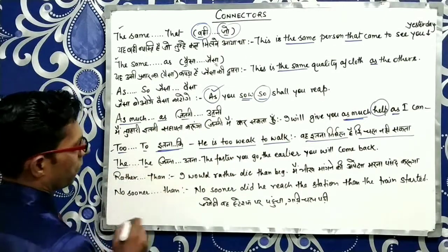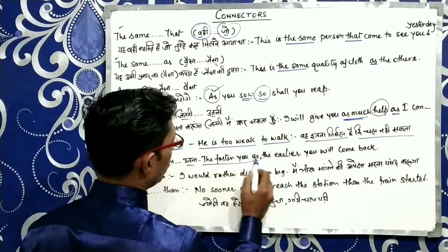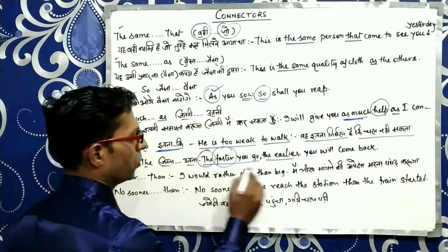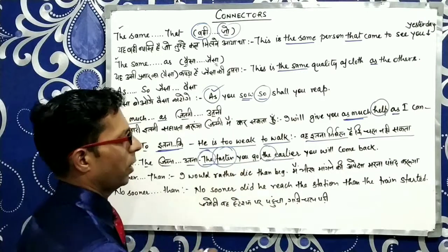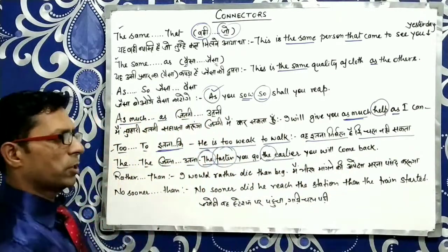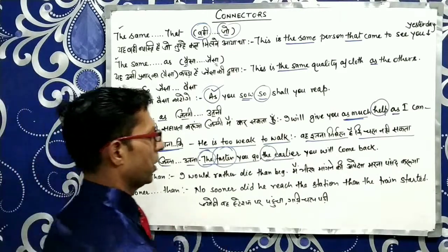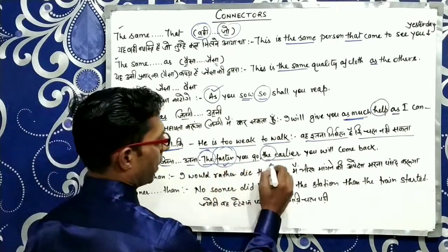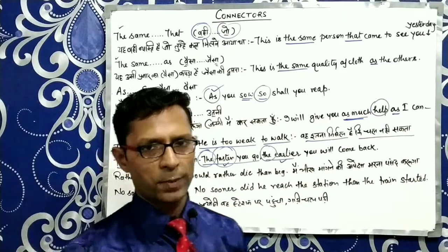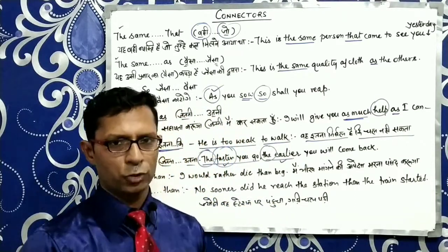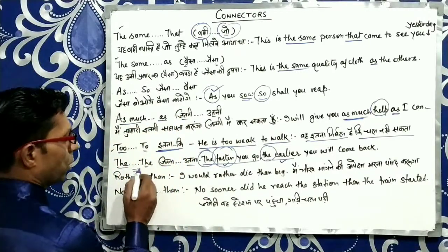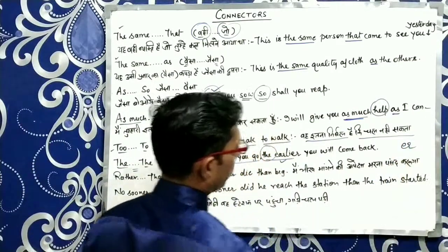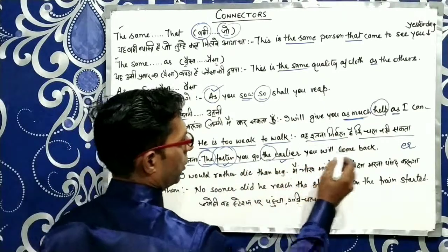اگلا connector ہے The...The — جتنا اتنا. The faster you go, the earlier you will come back — جتنا تیز تم جاؤگے اتنا جلدی واپس آؤگے. ایک بات کا دھیان رکھنا: جب بھی The...The کا use کریں تو اس کے بعد comparative degree یعنی ER والی form آنی چاہیے — positive یا superlative نہیں.